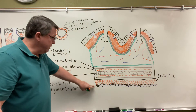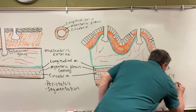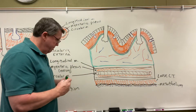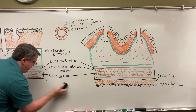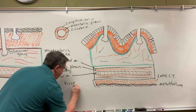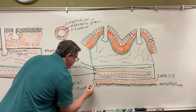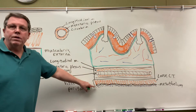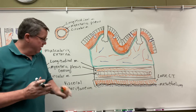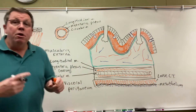These two together — the loose connective tissue and this layer, which we call the mesothelium — make up my serosa, also known as the visceral peritoneum. The mesothelium produces a fluid that decreases friction. So it's the loose connective tissue with the mesothelium, and the mesothelium actually produces fluid to decrease friction. On the other side you're going to have a parietal peritoneum, which basically does the same thing.